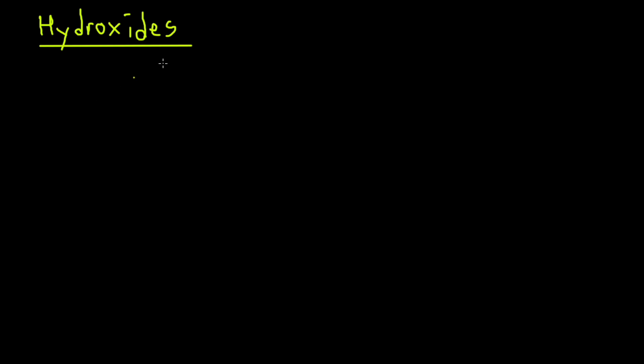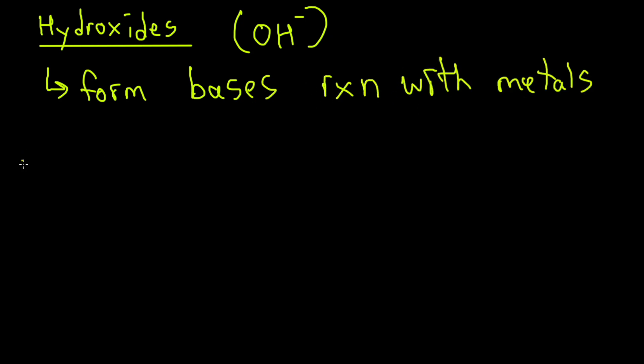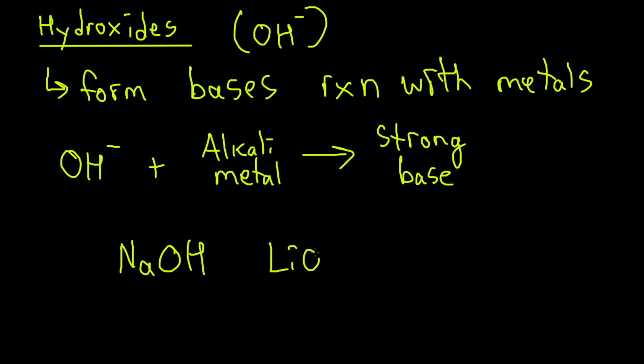Next, let's talk about hydroxides. Hydroxides is the OH-. Hydroxides are essentially going to be forming bases. So they form bases when they react with metals. And some of the strongest bases that will be formed is when the OH reacts with an alkali metal. So as an example of some alkali metals that form strong bases, it's going to be sodium. NaOH is a strong base. LiOH is a strong base. KOH is a strong base and so on. So there's going to be six strong bases and most of them will be formed from the alkali metals.